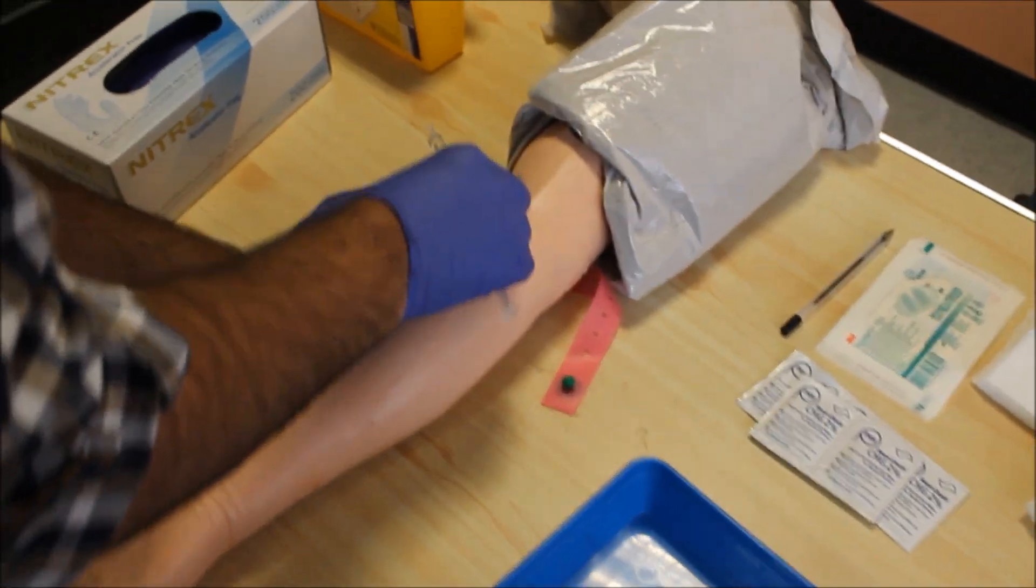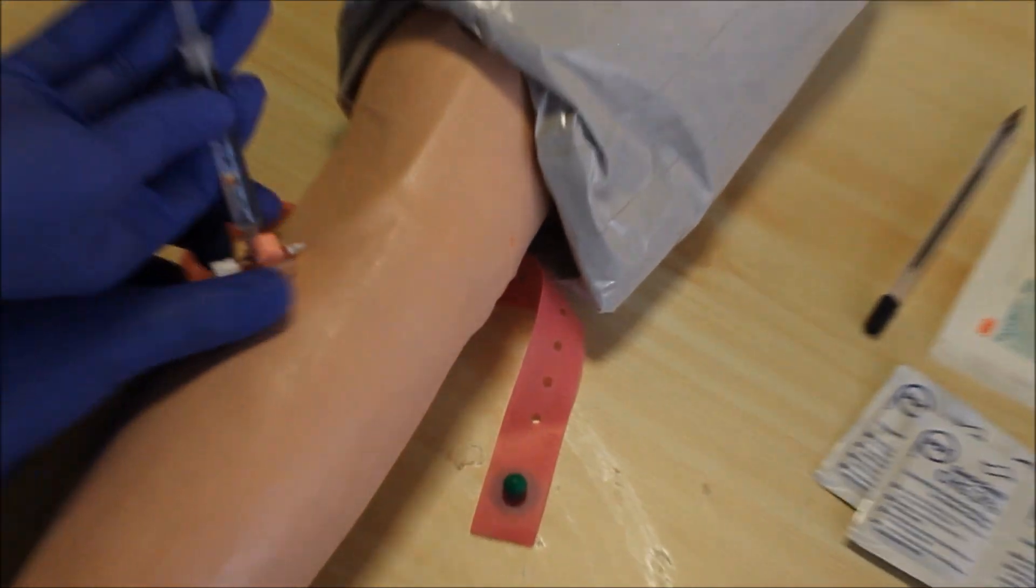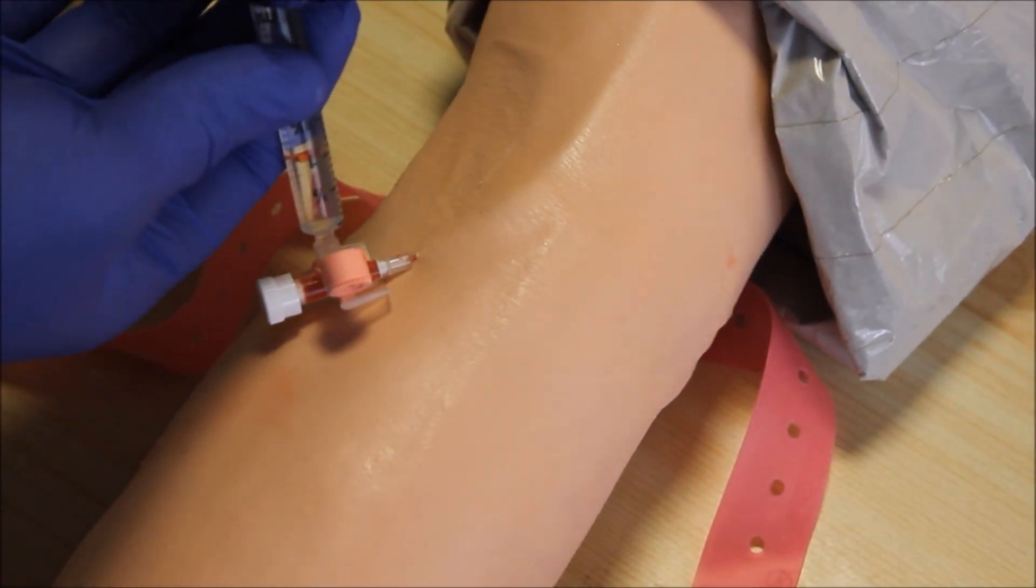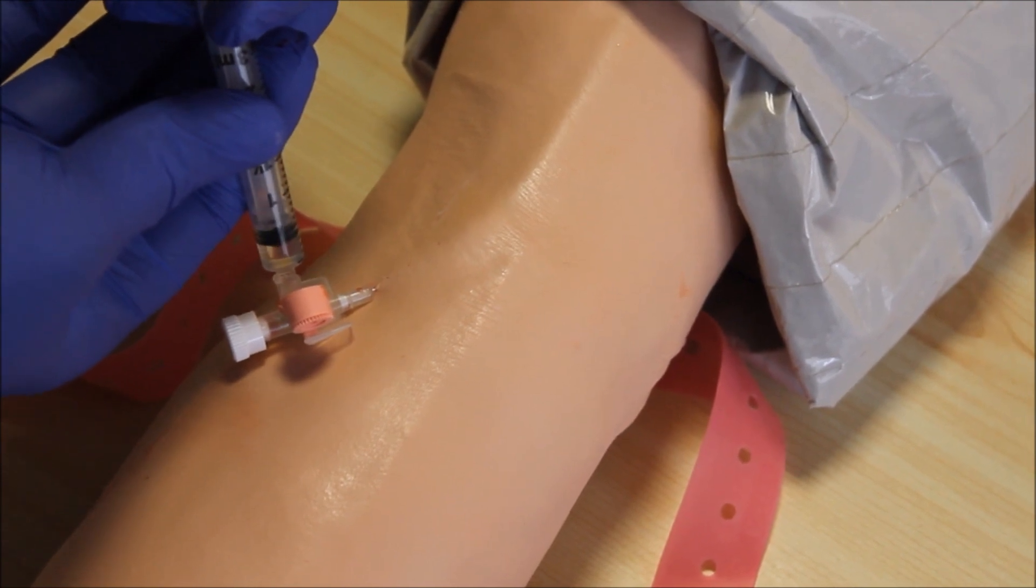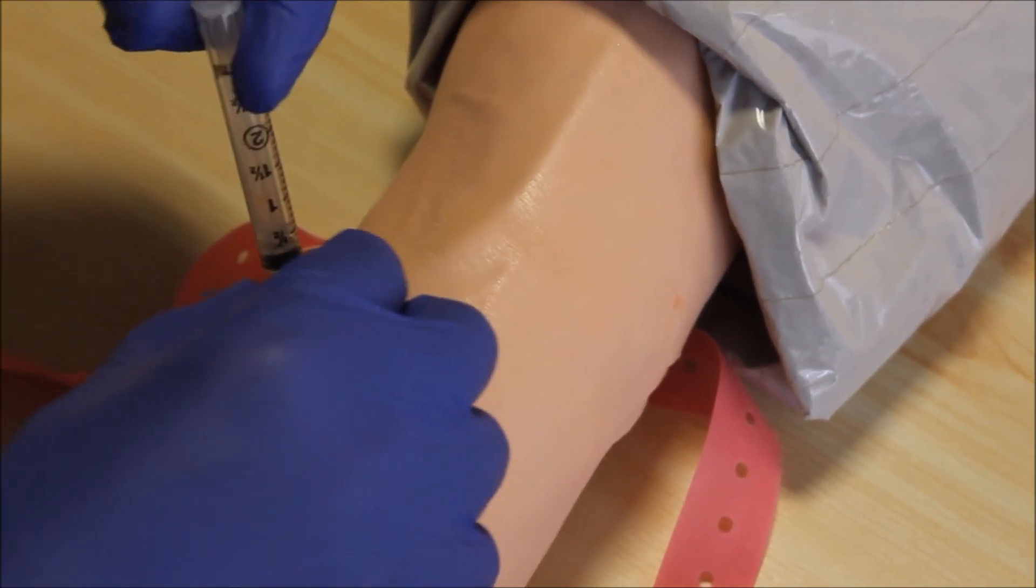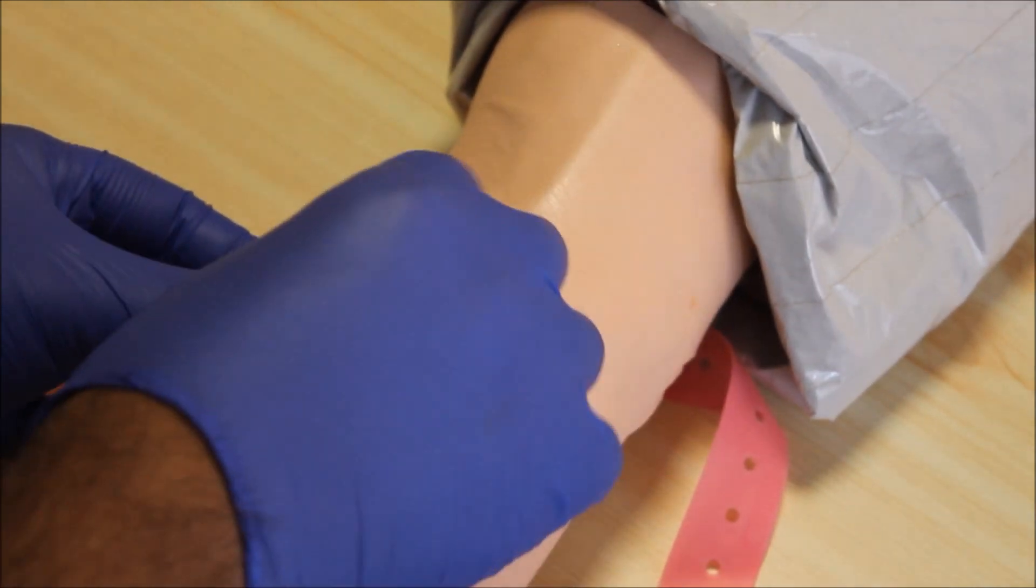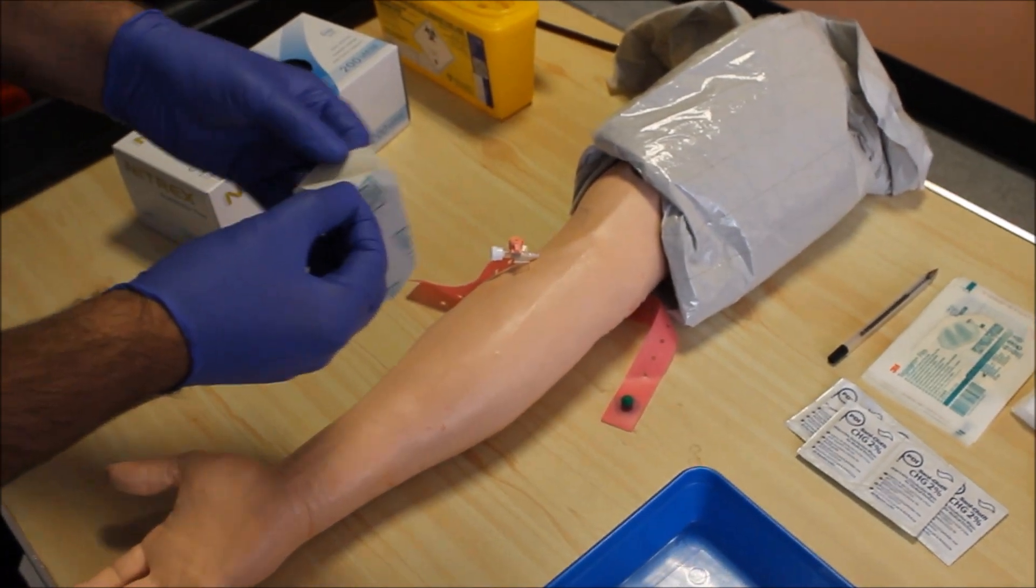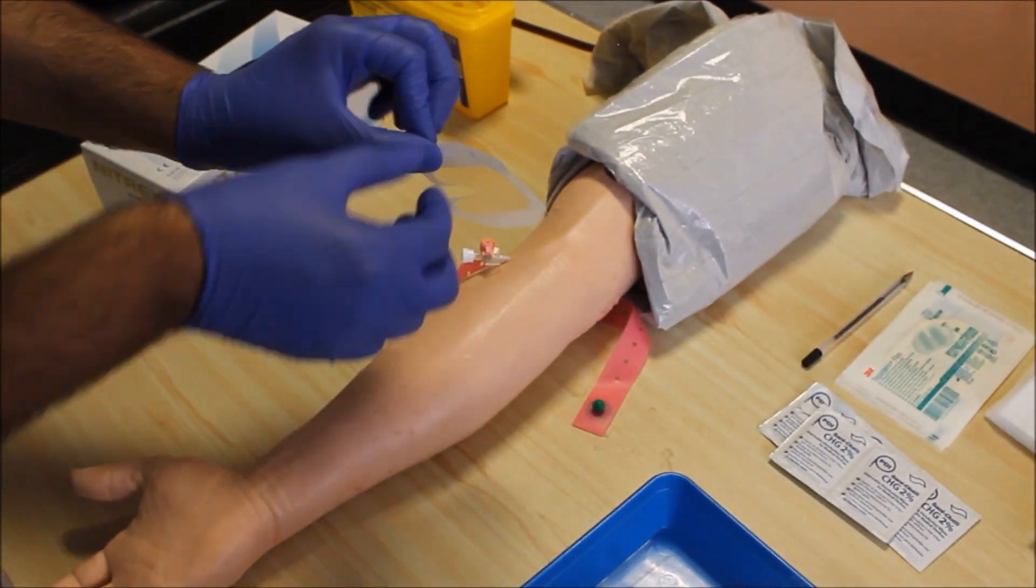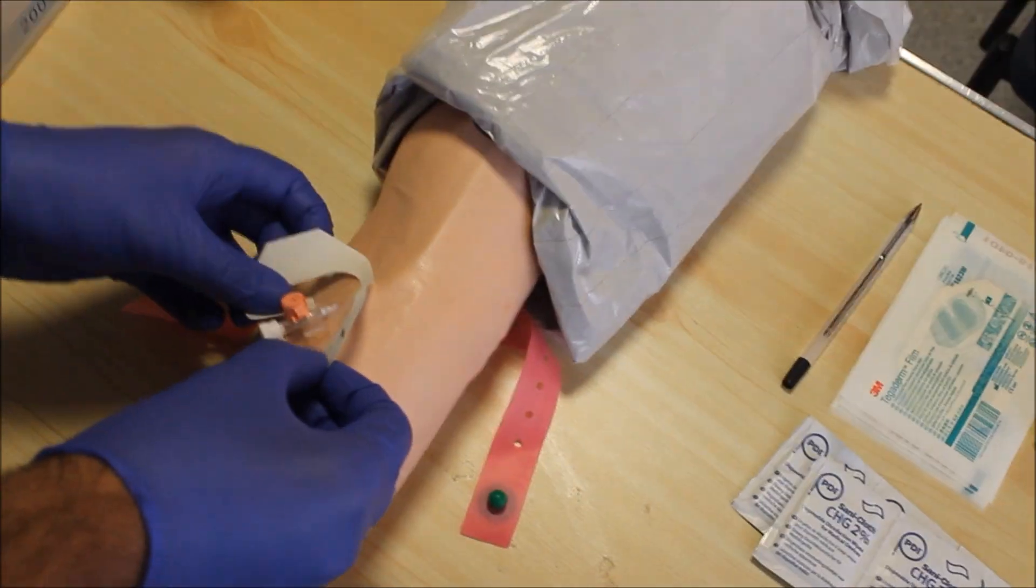Take the flush, open the top part of the cannula and flush the cannula. Place it on top of the cannula, and the last thing would be labeling the cannula.